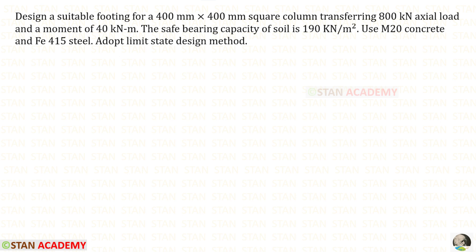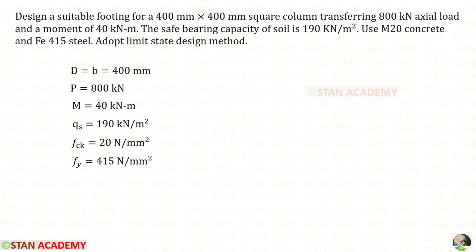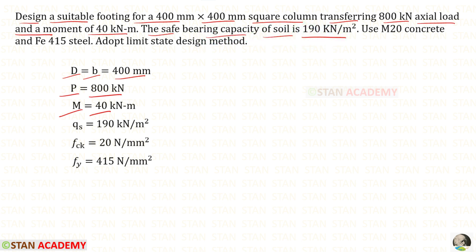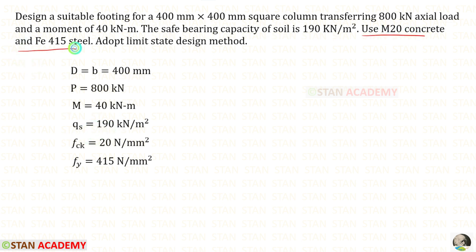Hello everyone. Today we are going to design a square footing. Let us read the question and write the given data. Design a suitable footing for a 400mm by 400mm square column transferring 800 kilonewton axial load. The axial load P is 800 kilonewton and a moment of 40 kilonewton meter. The safe bearing capacity of the soil QS is 190 kilonewton per meter square. Use M20 concrete and Fe 415 steel. FCK is 20, Fe is 415. We need to adopt the limit state method of design.